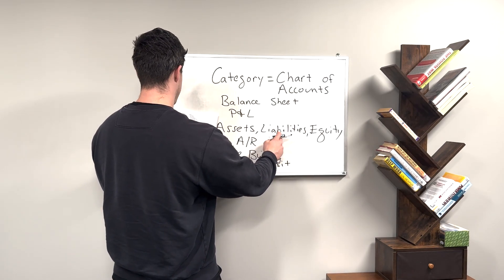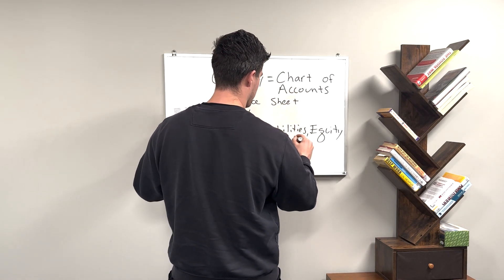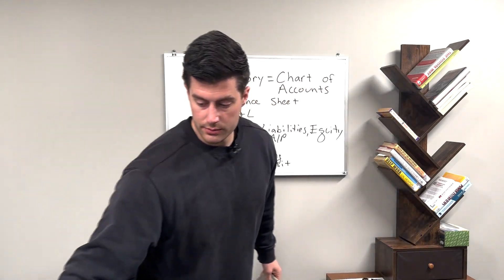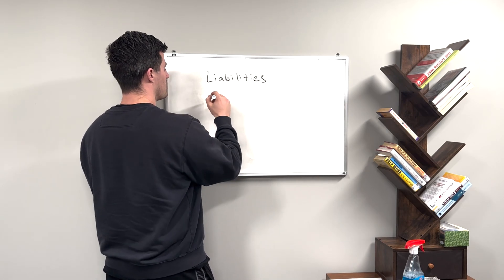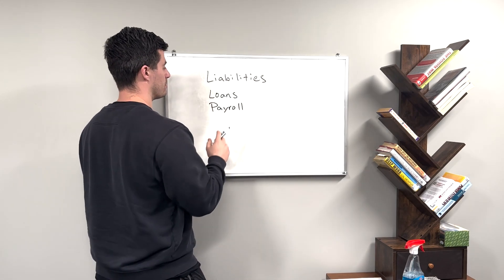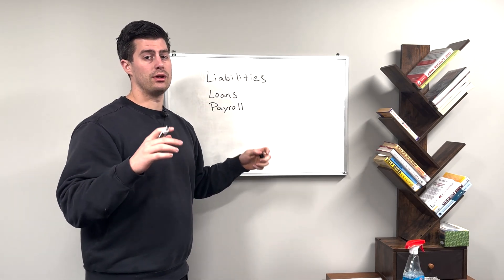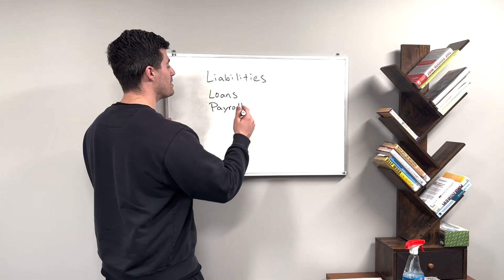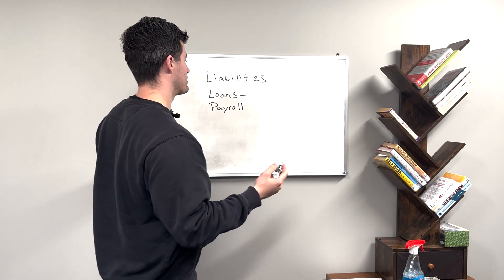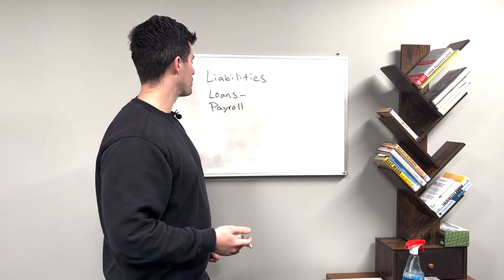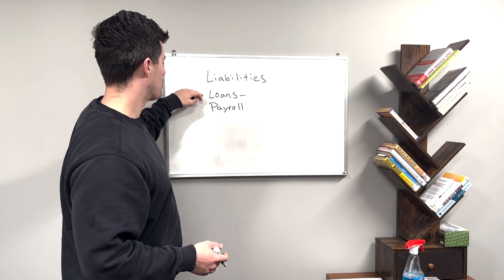Other liabilities include accounts payable — the opposite of accounts receivable — and then we also have loans and payroll. These are probably the two most common liabilities you're going to be categorizing for your clients. If a client receives money, that's probably a loan. A lot of people get a line of credit and receive, say, fifty thousand dollars from a bank or funding company, and that should be categorized as a loan, a line of credit, or a note payable.